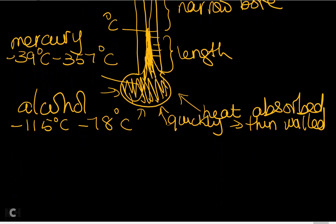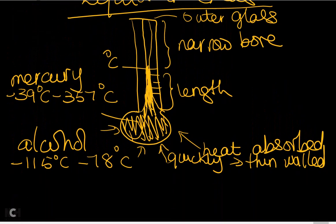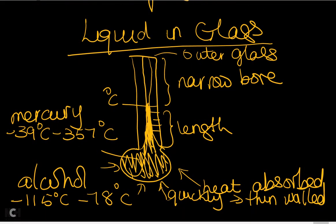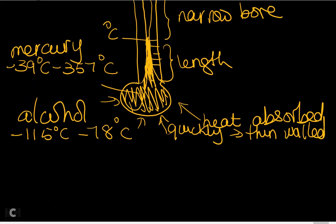Liquid-in-glass thermometers are advantageous because they give a very quick, direct reading. However, for changes smaller than about one degree, it's advisable to use a platinum resistance thermometer or a thermocouple, as liquid-in-glass thermometers are not very sensitive to small changes in temperature.